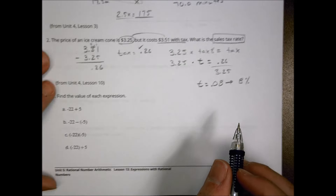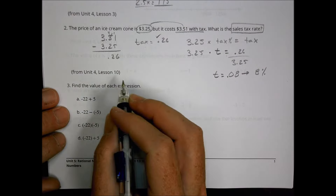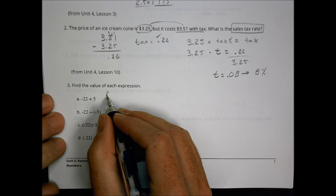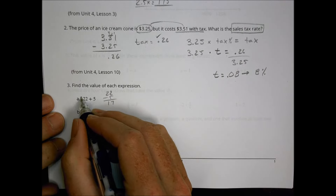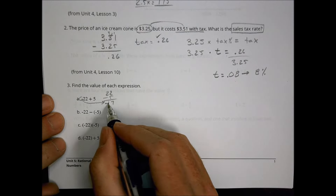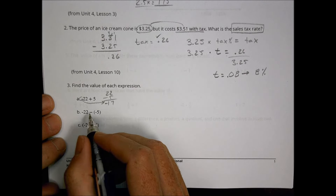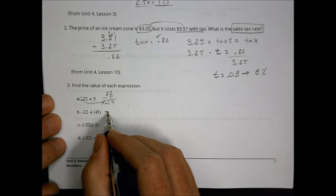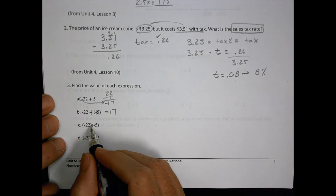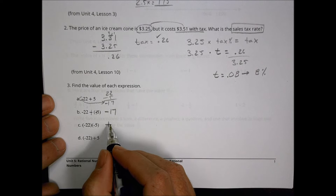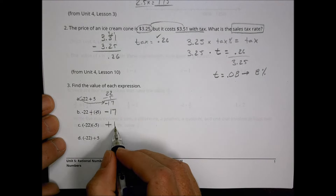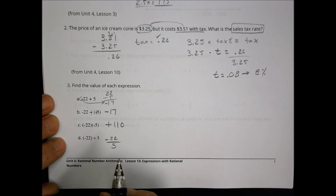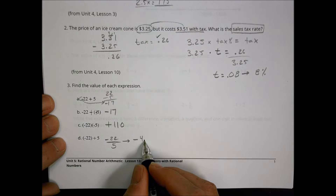Number three: evaluate these expressions. Negative twenty-two plus five — different signs, so find the difference: twenty-two minus five is seventeen, keep the sign of the greater absolute value, giving negative seventeen. Next, negative twenty-two minus five becomes negative twenty-two plus negative five — same result. Then negative twenty-two times negative five: a negative times a negative is positive, and twenty-two times five is one hundred ten. Finally, negative twenty-two divided by five gives negative four point four.